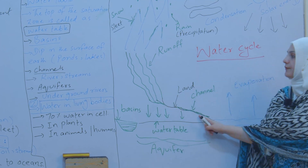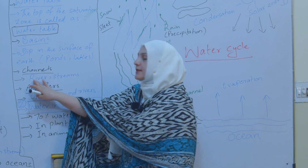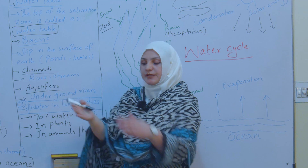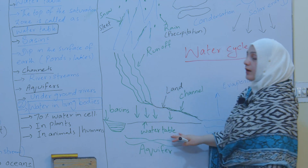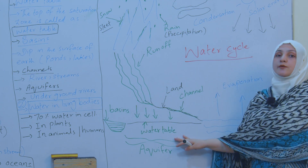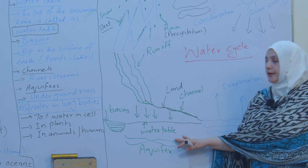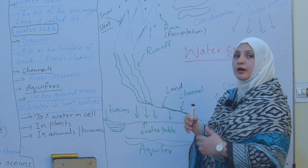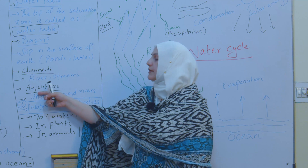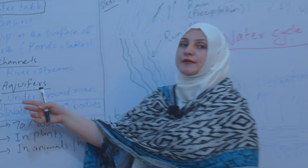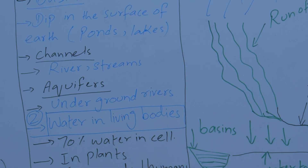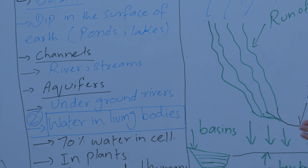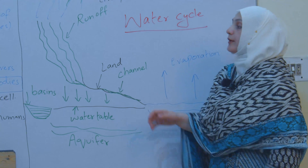Then channels can be formed. Channels are the rivers or streams where water runs off and flows. Sometimes underground rivers are also observed in various places on earth — we find underground rivers and channels, and these are basically considered as aquifers. Underground rivers are called aquifers.